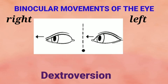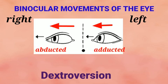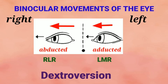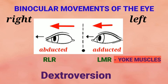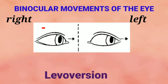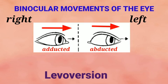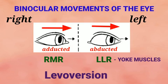In dextroversion, both eyes move to the right. The right eye is in the abducted position and the left eye in the adducted position. The right lateral rectus acts, synchronized with the left medial rectus — these are the yoke muscles for dextroversion. In levoversion, both eyes move left; the left eye is abducted and the right eye adducted. The left lateral rectus acts synchronized by the right medial rectus — these are the yoke muscles for levoversion.